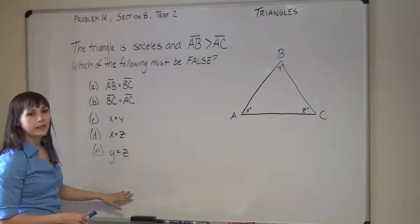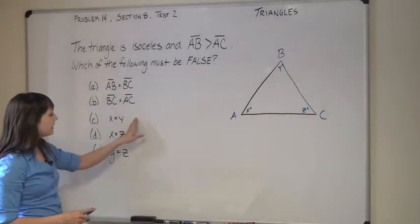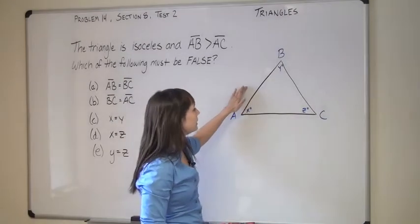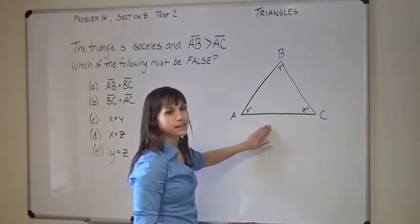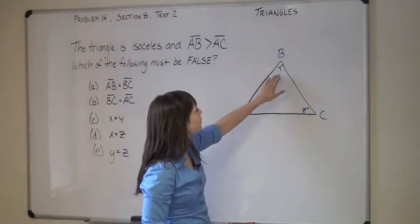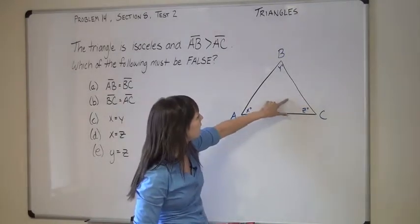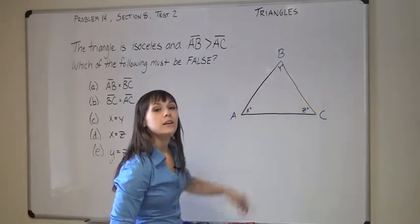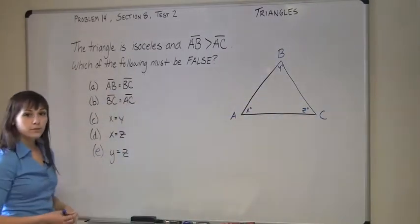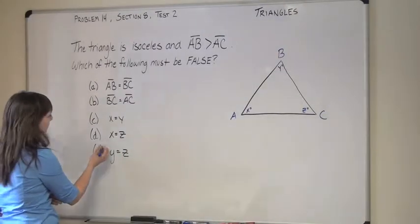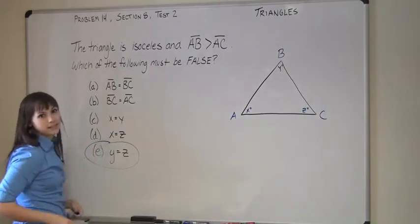But there is something related to that that is an answer choice. It has to do with the angles. Because side AB is not equal to side AC, then it's impossible for the angle that opens up to side AC to be equal to the angle that opens up to side AB. So as a result, angles Y and Z definitively cannot be the same. And that's why E is the correct answer.